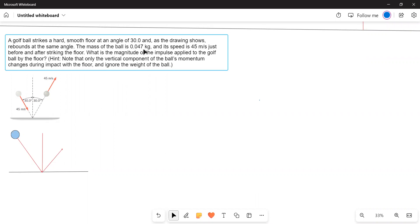The mass of the ball is 0.047 kilograms and its speed is 45 meters per second just before and after striking the floor. What is the magnitude of the impulse applied to the golf ball by the floor?